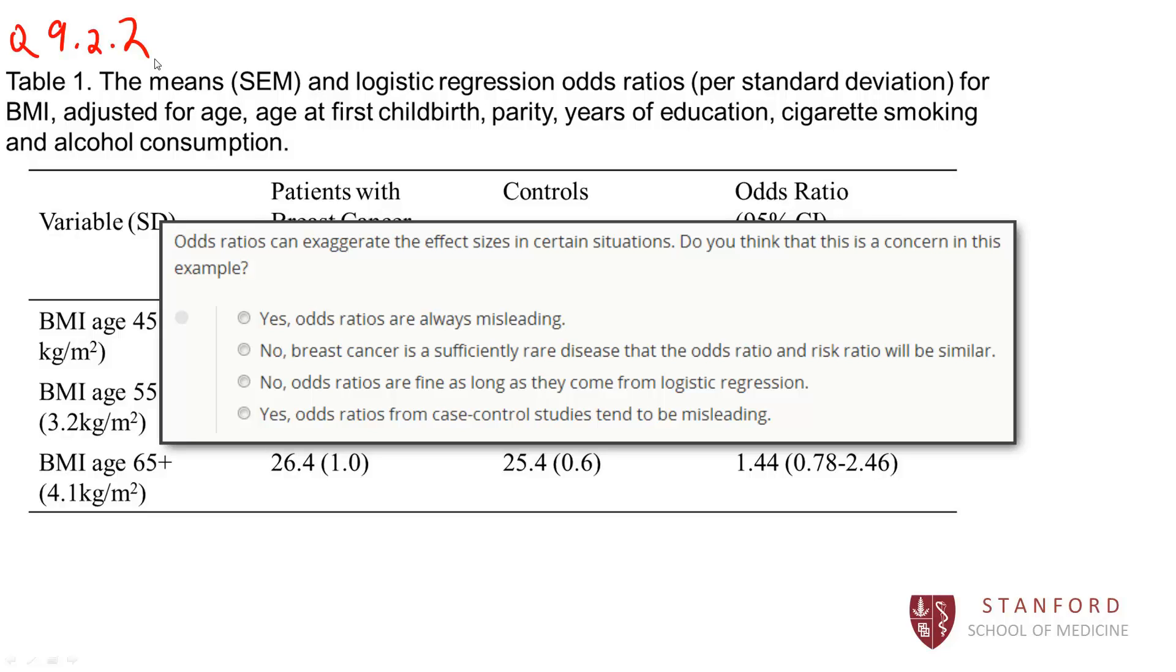Odds ratios can exaggerate effect sizes. They exaggerate effect sizes when your outcome is common. Well, fortunately, breast cancer is one of the most common cancers, but it's still not very common. The general rule of thumb is if the prevalence is less than 10%, then that's considered sufficiently rare, an odds ratio will be close enough to a risk ratio. So the correct answer here is B, breast cancer is sufficiently rare that the odds ratio and the risk ratio will be similar.